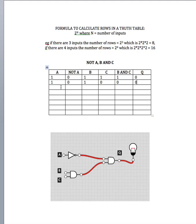Let's try A as ON, B as OFF, and C as ON. We know that NOT A is 0, and the B and C output is 0 as well, because it's the reverse of the previous row. So our output will be 0.